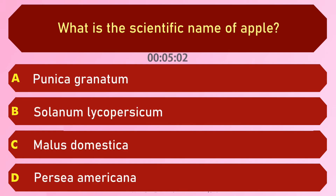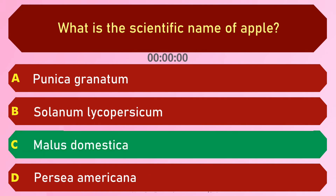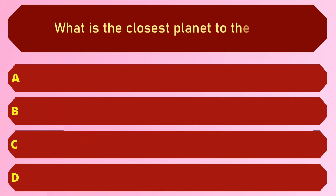What is the scientific name of apple? Options are: A) Punica granatum, B) Solanum lycopersicum, C) Malus domestica, and D) Persea americana. The answer is option C, Malus domestica.